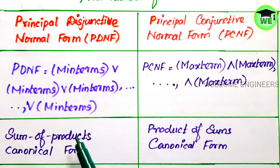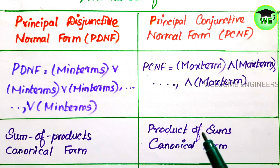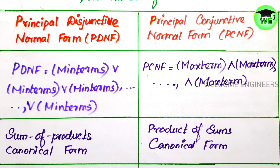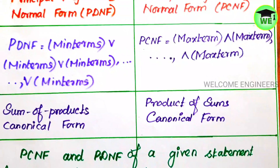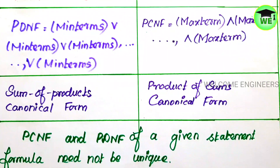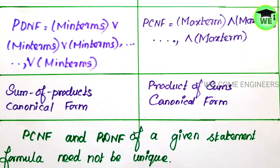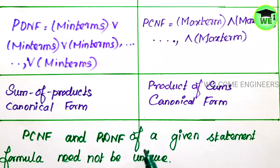PDNF is also called the sum of products canonical form. PCNF is also called the product of sums canonical form. Also note one important point: the PCNF and PDNF of a given statement formula need not be unique. The answer may differ depending on how the rules and terms are applied in different situations, so the answer is not necessarily unique.